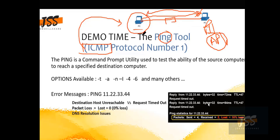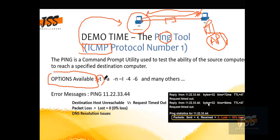Instead of going to that computer — which may be far away on floor two while you are on floor one — instead of walking over to check if it's working fine, you just ping that computer directly from floor one. If you receive a reply, it means that computer is alive. It has some options available which we will discuss in detail in this demo.